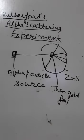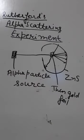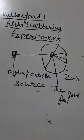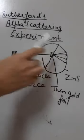In this experiment, Rutherford produced a narrow beam of alpha particles from a radioactive substance like radium and directed it at a thin sheet of gold foil.